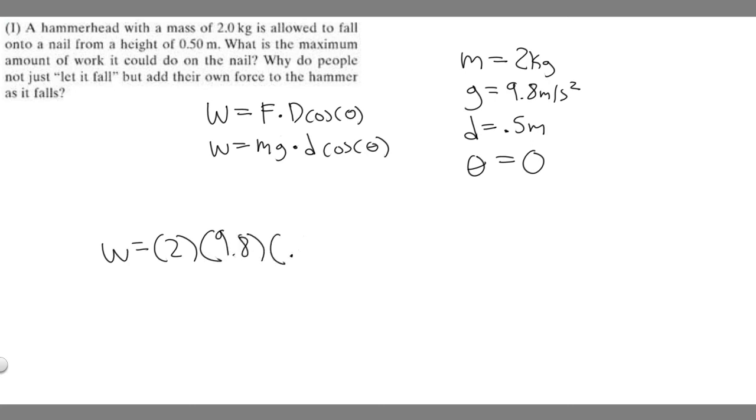Plugging it in: 2 times gravity, which is 9.8, multiplying it by d, which is the distance, times the cosine. In this case, theta equals 0. The cosine of 0, you need to know, is just 1.